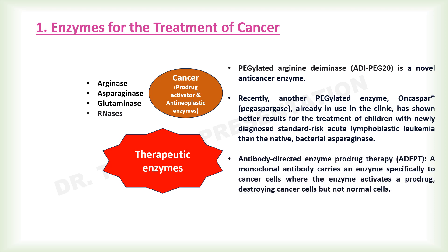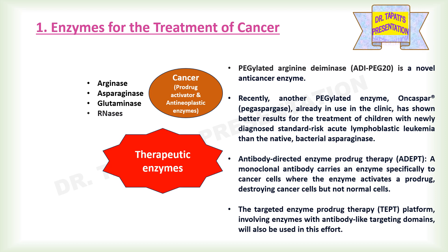Antibody-directed enzyme prodrug therapy (ADEPT) illustrates a further application of enzymes as therapeutic agents in cancer. A monoclonal antibody carries an enzyme specifically to cancer cells, where the enzyme activates a prodrug, destroying cancer cells but not normal cells. This approach is being utilized to discover and develop a class of cancer therapeutics based on tumor-targeted enzymes that activate prodrugs. The targeted enzyme prodrug therapy (DEPT) platform, involving enzymes with antibody-like targeting domains, will also be used in this approach.